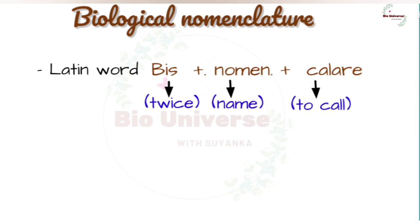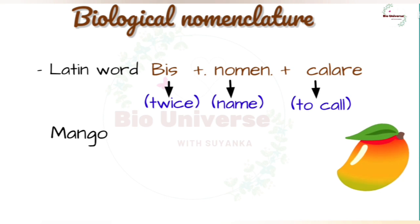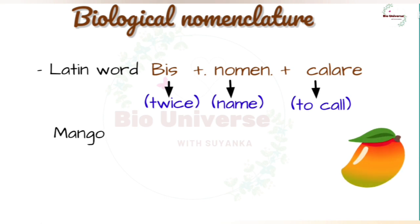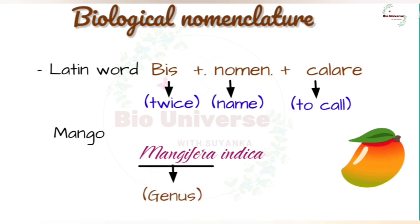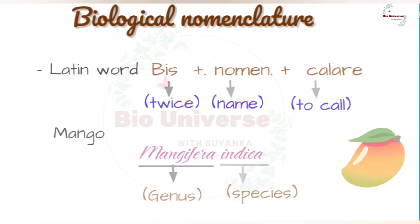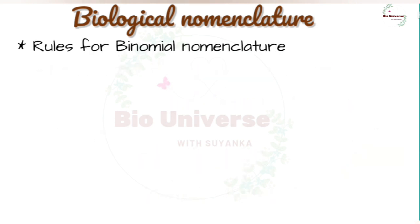Let us take the example of mango to understand the way of providing scientific names better. The scientific name of mango is written as Mangifera indica. In this name, Mangifera represents the genus while indica is the particular species. Rules for binomial nomenclature were initially framed by Linnaeus.